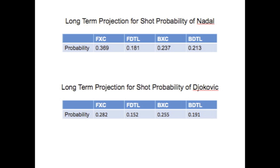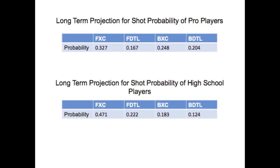The equilibrium matrices for the two professional players are also pretty similar. One difference is the disparity in the percentage of cross-court forehands between the two. This is explained by the fact that Nadal is left-handed. Because Nadal is left-handed, his forehand cross-court goes to Djokovic's backhand rather than his forehand, which would be the case if the players were both right or left-handed.